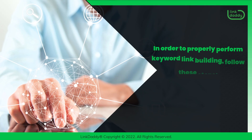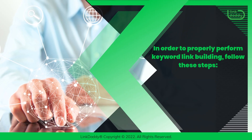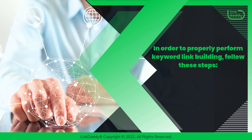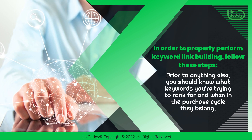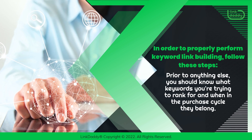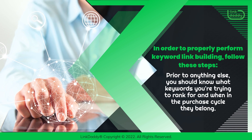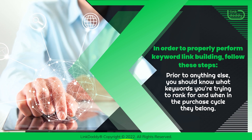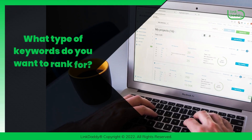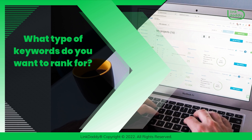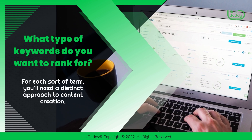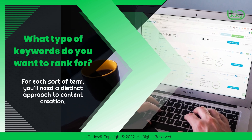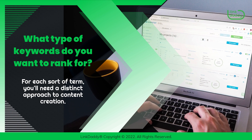In order to properly perform keyword link building, follow these steps. Prior to anything else, you should know what keywords you're trying to rank for and when in the purchase cycle they belong. What type of keywords do you want to rank for? For each sort of term, you'll need a distinct approach to content creation.